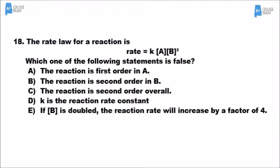Number 18 is a non-math question: which of the following is false? Going through each choice — letter A says first order with respect to A; A has an exponent of 1, so that's true. Letter B says second order with respect to B; it is second order, so that's true. Letter C says the reaction is second order overall — but if A is first order and B is second order, overall it would be third order. So letter C is wrong.